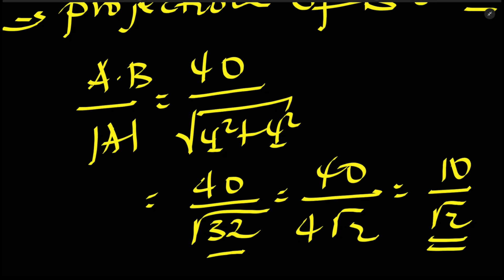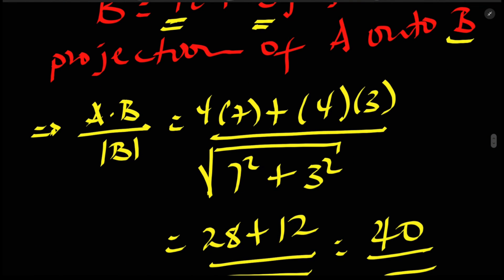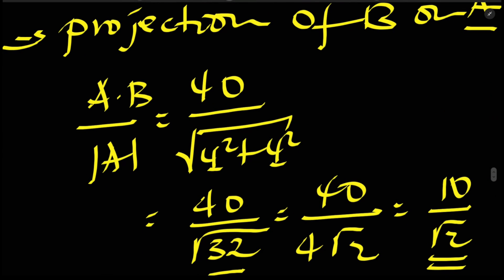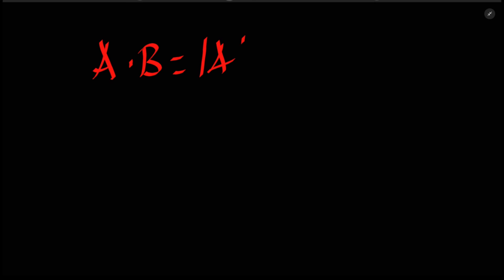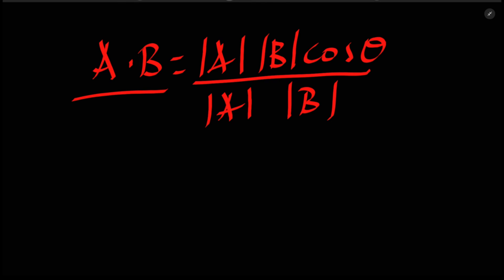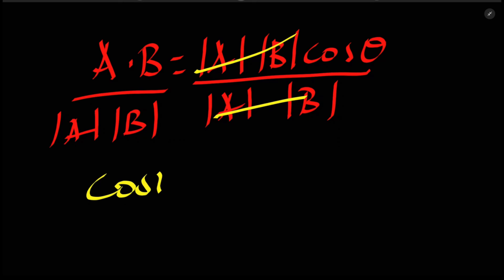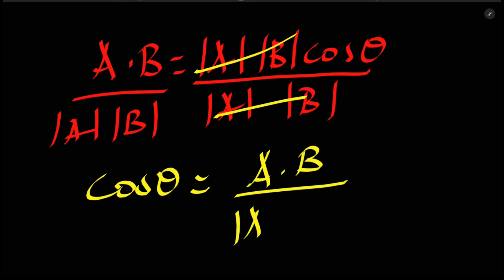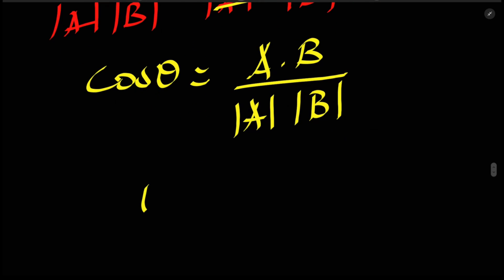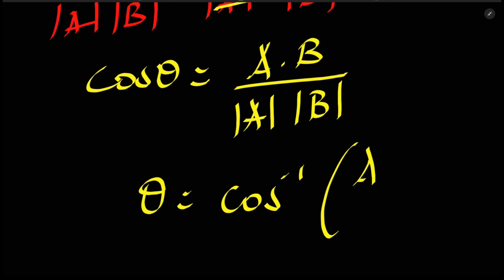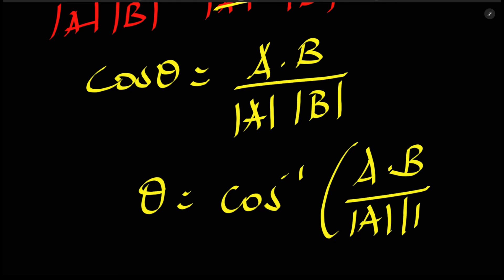To find the angle between the vectors, we use the dot product formula: A dot B equals the magnitude of A times the magnitude of B times cosine of theta. Rearranging, cosine of theta equals A dot B divided by the magnitude of A times the magnitude of B. Therefore, theta equals the inverse cosine of A dot B divided by the magnitudes.